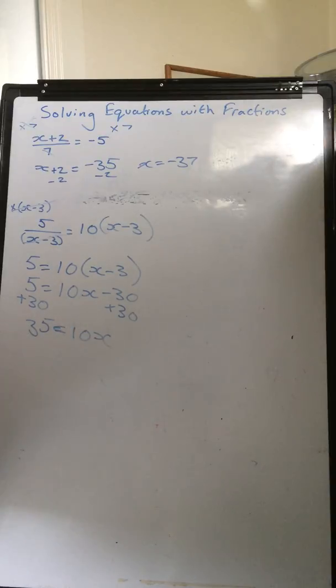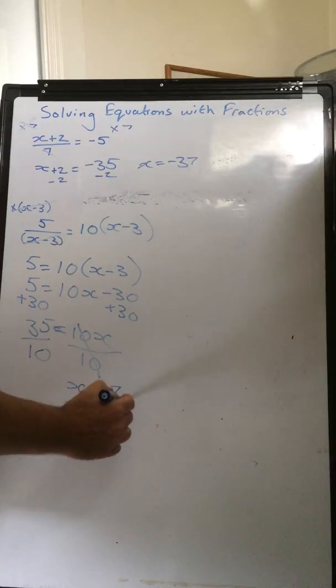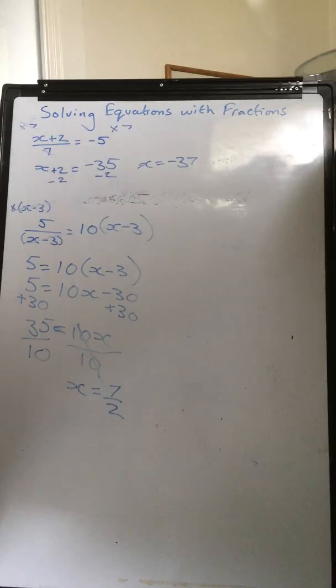Finally, we're going to divide both sides by the coefficient of x, which is 10. Divide both sides by 10. So we're left with x is 35 over 10. Or we can simplify that to x is 7 over 2. Okay, perfect. So there we have it.